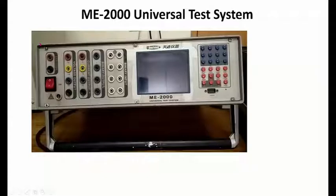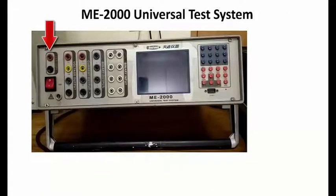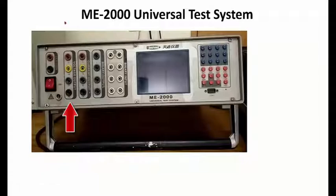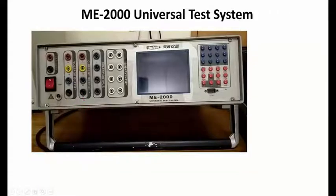Looking into the panels, we can see certain inputs and outputs. On the leftmost side is a terminal to provide DC output, since some relays operate on DC sources. Moving right, there is a panel to provide voltage output, used to test voltage relays. To the right of the voltage output is the current output, which is employed to test current relays.